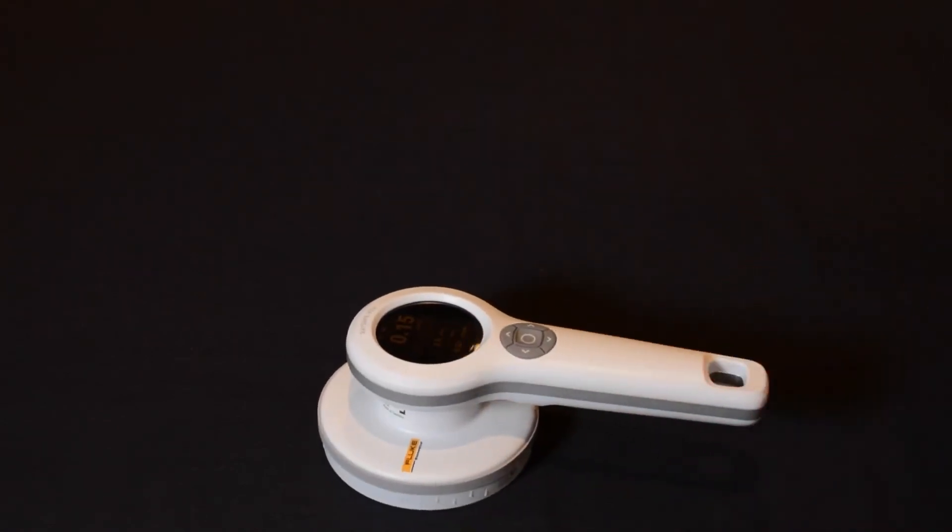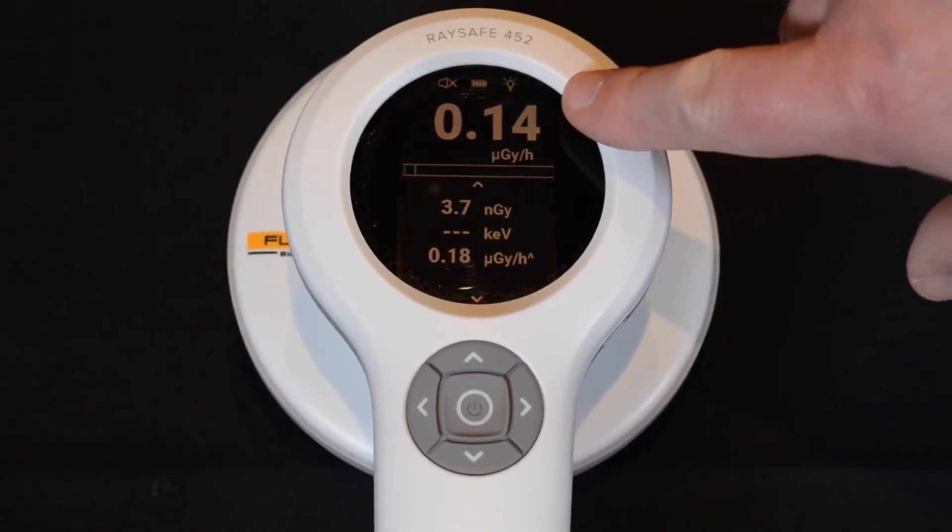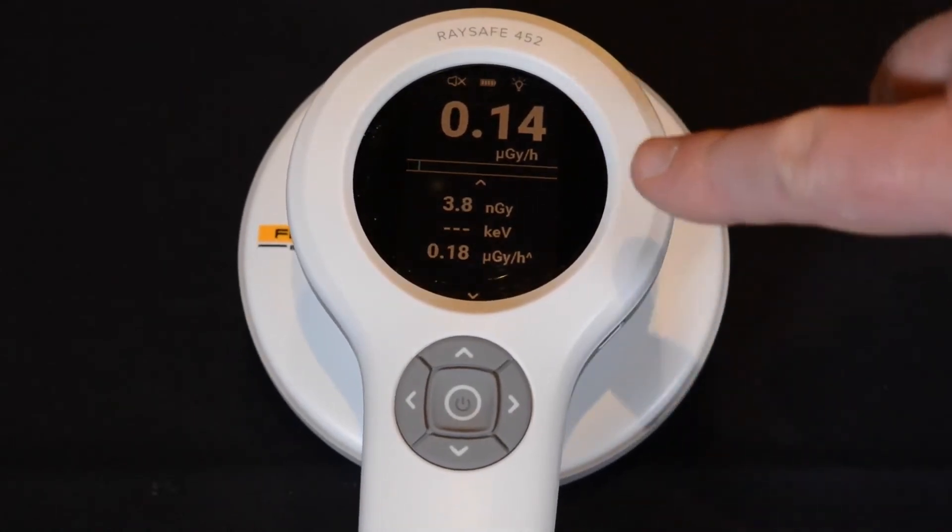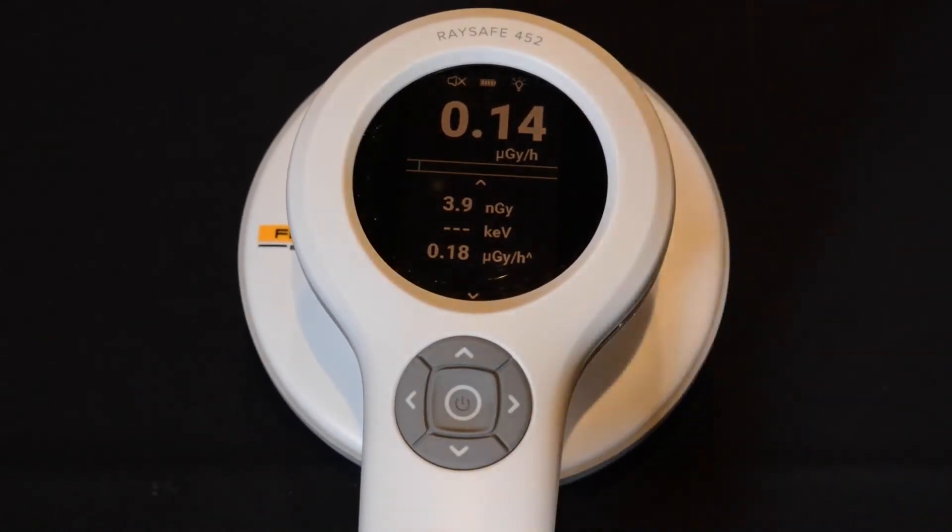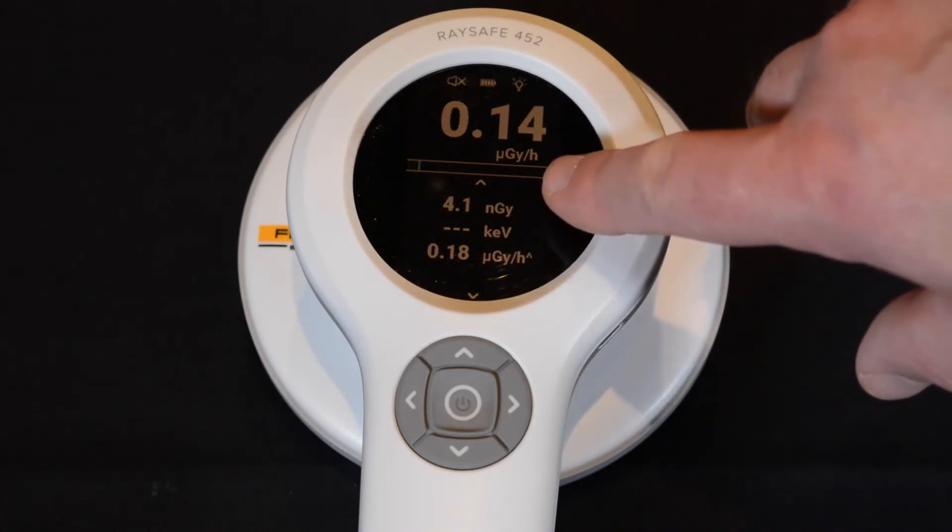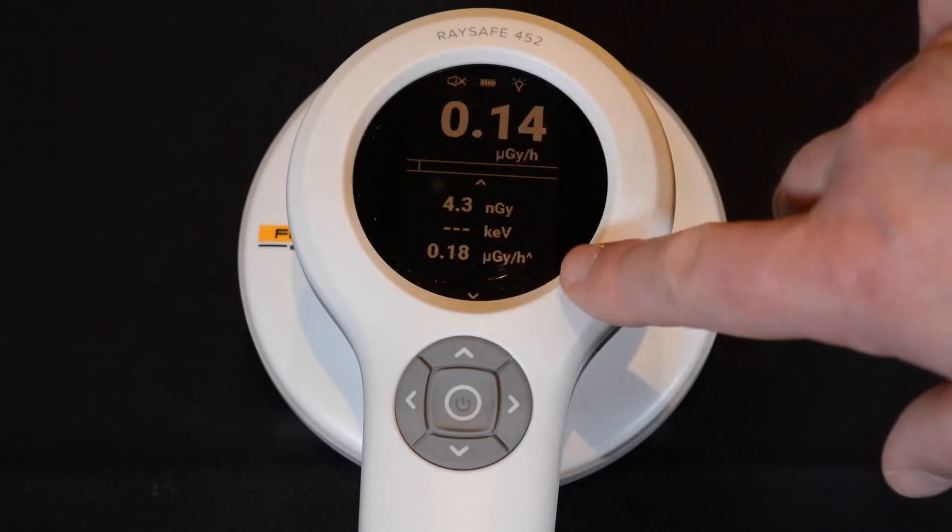The first row always shows the live intensity. Next is the integrated dose for the measurement. If intensity is high enough, you also get the live mean energy. At the bottom, you have the highest intensity recorded.